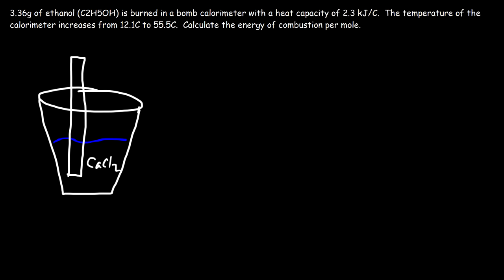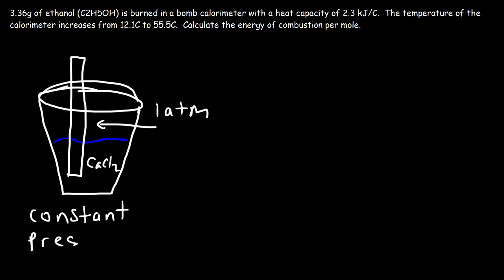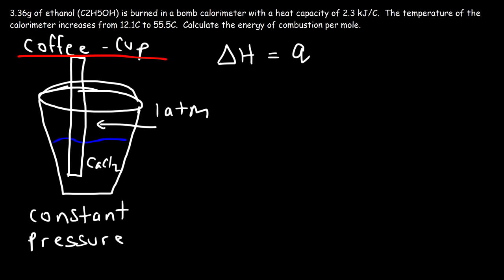Based on the change in temperature you can calculate how much energy was absorbed by the solution and determine the enthalpy change of calcium chloride. The key thing to understand is that the coffee cup calorimeter measures the energy change at constant pressure — because gas particles in the air maintain 1 atm pressure at sea level. This matters because enthalpy is the energy transferred only when measured at constant pressure.